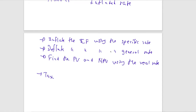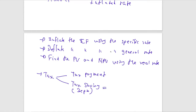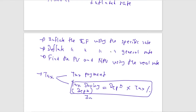When dealing with tax in advanced NPV calculations, there are two adjustments: tax payment (a cash outflow) and tax saving on depreciation. Tax saving is calculated as: depreciation amount × tax percentage, and it is treated as a cash inflow in the NPV calculation.